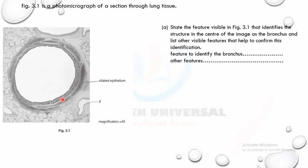The question says: state the feature visible in figure 3.1 that identifies the structure as the bronchus, and list other visible features that confirm this. The feature that identifies the bronchus is the irregular blocks of cartilage — not C-shaped, which would indicate trachea.